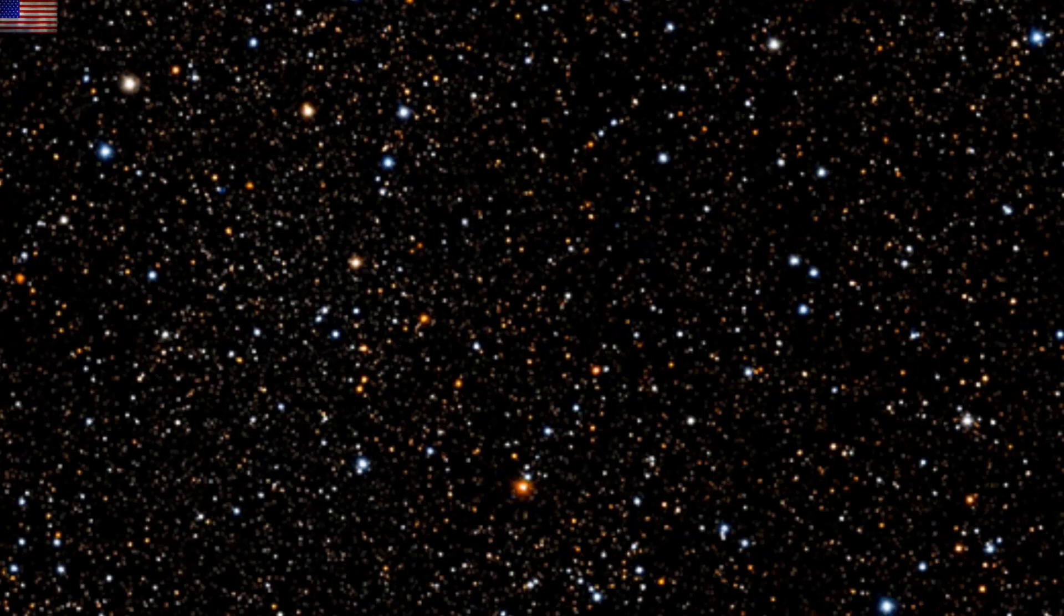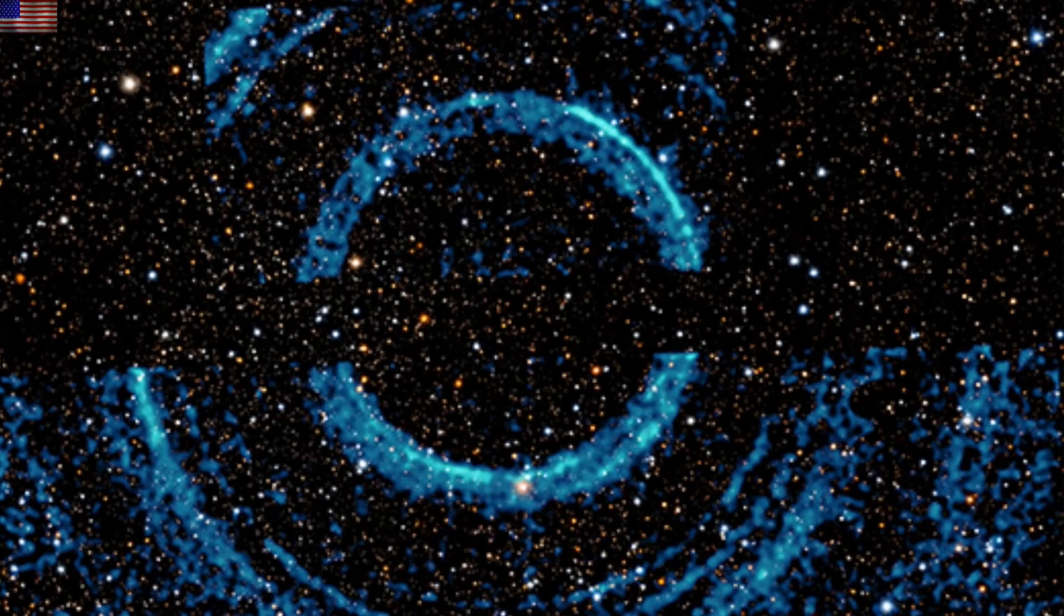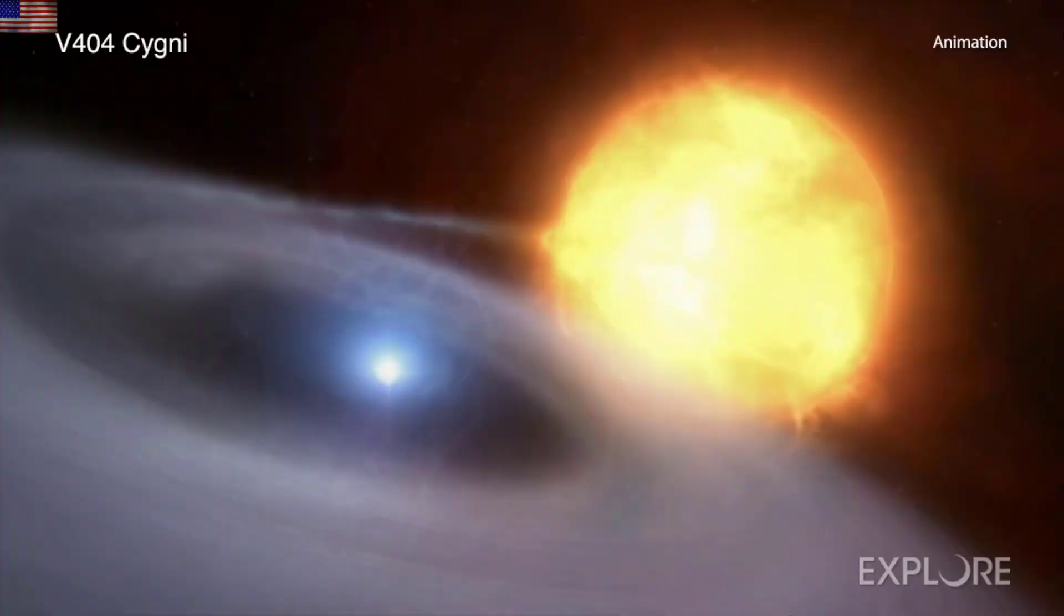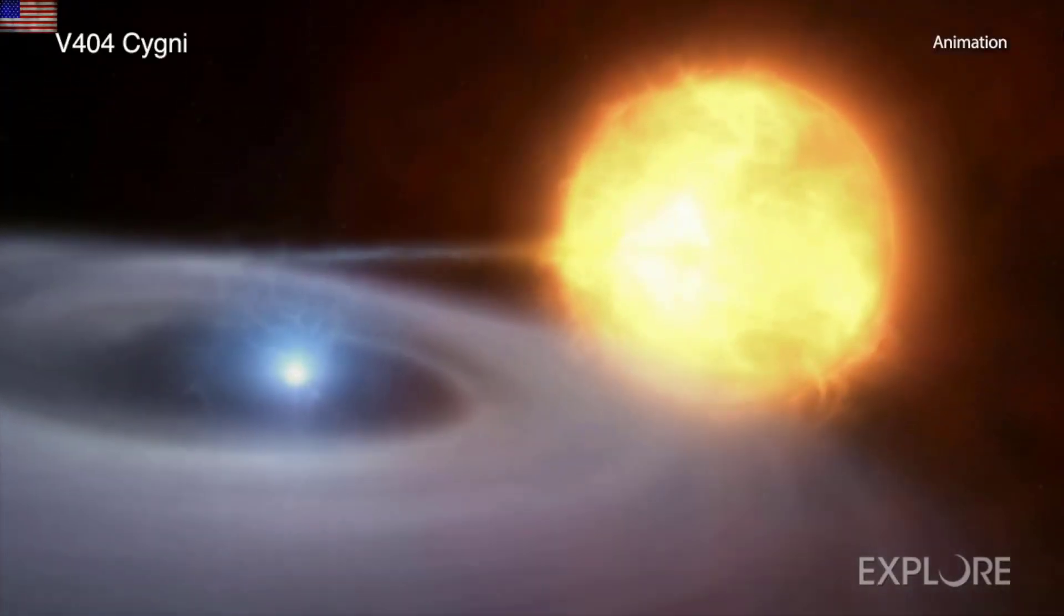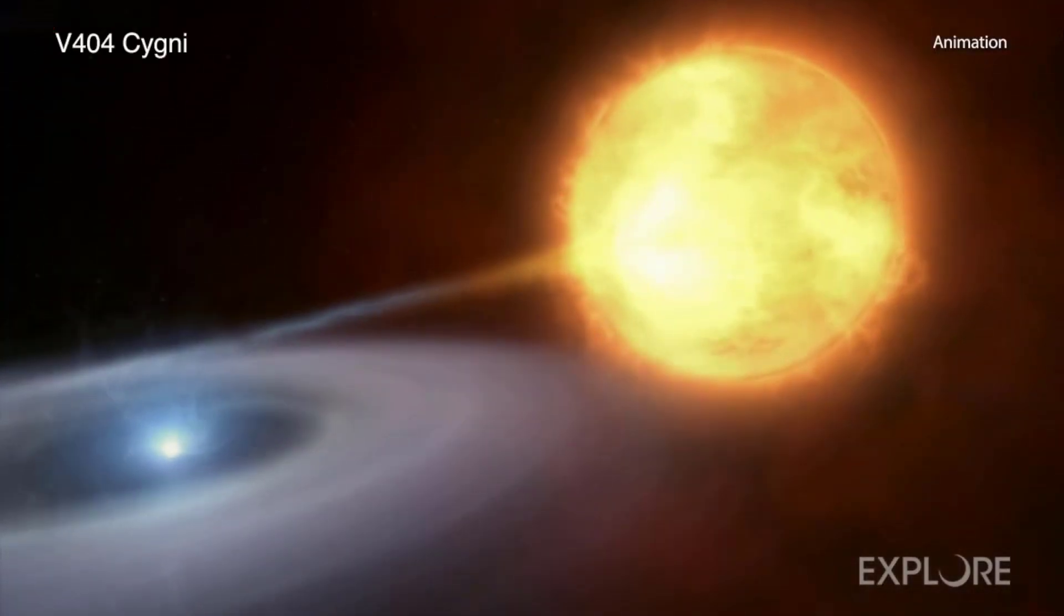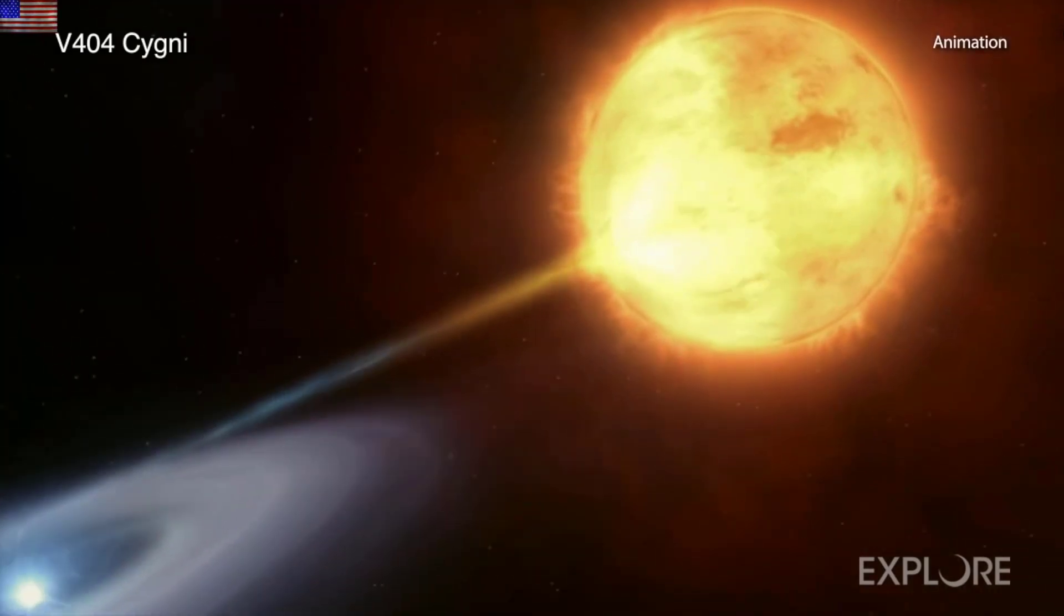So they pointed Chandra here at this seemingly boring area of space, and what came back was not so boring. Their explanation? There must be a black hole in there near the center, with a binary from which it's feeding. The white thing is supposed to be the black hole in their animation, by the way. Feeling less confused? Me either.